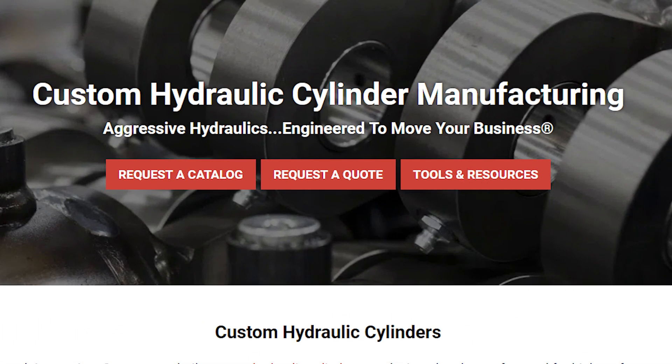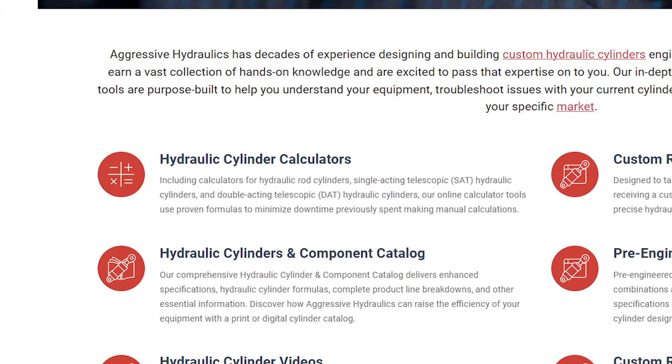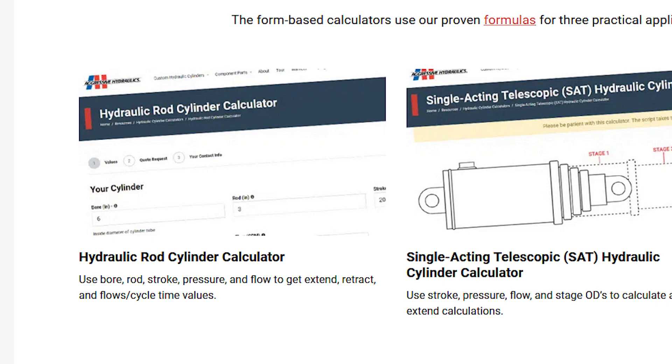Select Tools and Resources from the home page, then click on Hydraulic Cylinder Calculators, and then select Hydraulic Rod Cylinder Calculator.